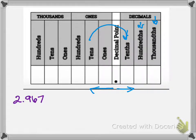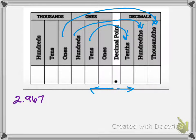We have tens and tenths, hundreds and hundredths, thousands and one-thousandths. And it would keep going on — ten-thousandths, and so on.